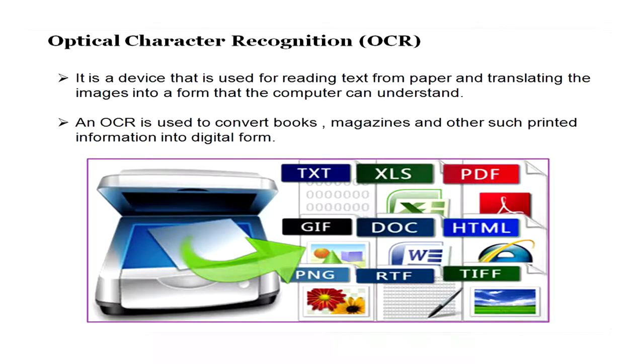Next we have OCR — Optical Character Recognition — a device used for reading text from paper and translating the images into a form a computer can understand. You must have heard about books being converted to digital form; the device used for this is the OCR. Pages of books are scanned and converted into digital forms such as text files, Excel files, or PDF files. An OCR is basically used to convert books, magazines, and other printed information into digital form.